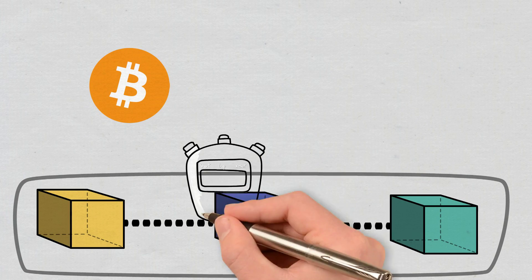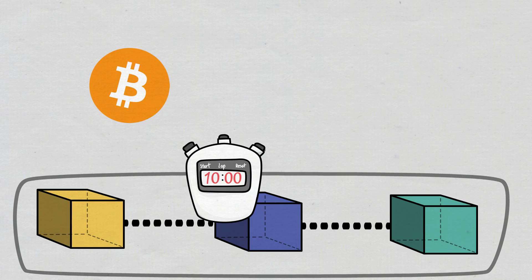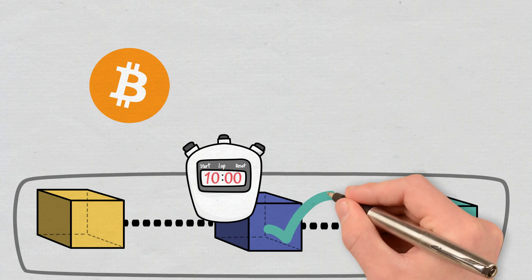In the case of Bitcoin, a new block is created around every 10 minutes. After the block is finalized, no alterations can be made to it, as it would be noticed and rejected by the users on the network.